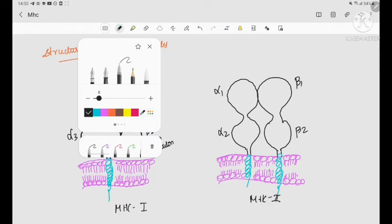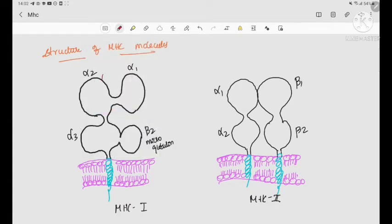So this cleft is the antigen peptide binding fragment between alpha 1 and alpha 2 in MHC 1. And in MHC 2, it is between alpha 1 and beta 1. So in MHC 1 it is alpha 1 and alpha 2, and in MHC 2 it is alpha 1 and beta 1. These are the antigen protein binding sites.